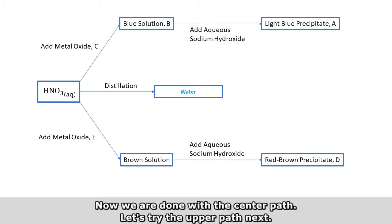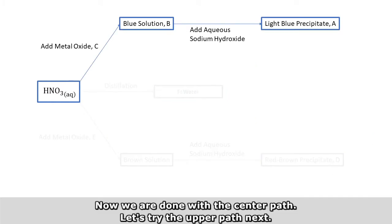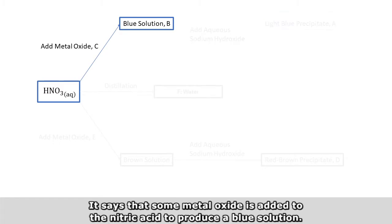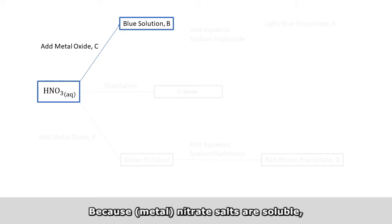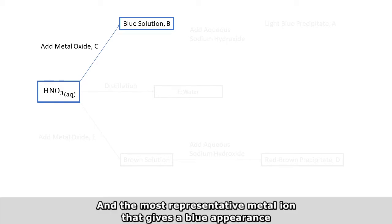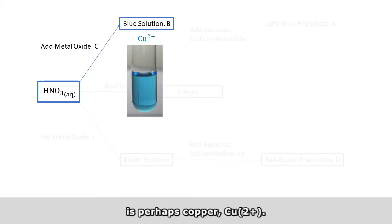Now we are done with the center path. Let's try the upper path next. It says that some metal oxide is added to the nitric acid to produce a blue solution. Because nitrate salts are soluble, the blue color is attributed to the metal ion. And the most representative metal ion that gives a blue appearance is perhaps copper, Cu2+.